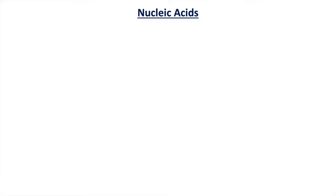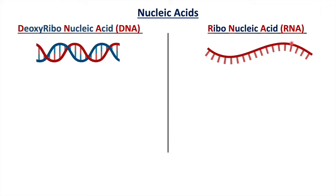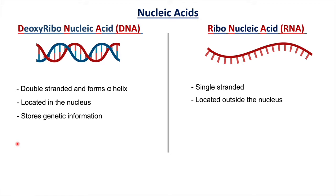There are basically two types of nucleic acids. One is called deoxyribonucleic acid, that is DNA, and the second is ribonucleic acid, which is called RNA. DNA is a double-stranded molecule which forms an alpha helix, whereas RNA is a single-stranded molecule. DNA is mostly located in the nucleus, most importantly in eukaryotes, and RNA is located outside the nucleus.